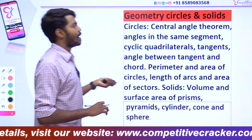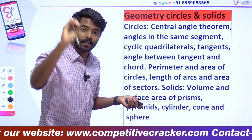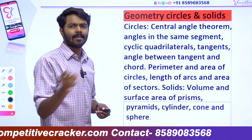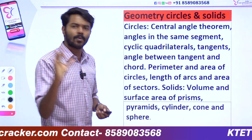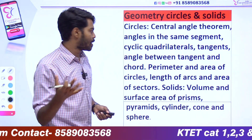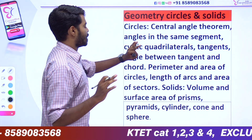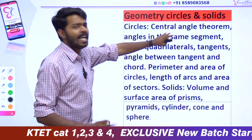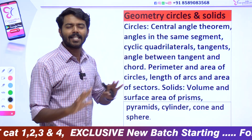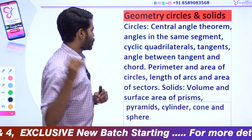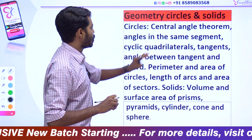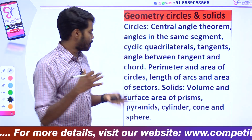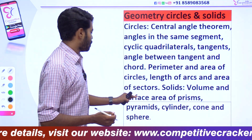Geometry — circles and solids. As you can see, central angles are very important. Angles are the same. If you have any type, all of the content is available. You can see the tangent, the perimeter area, the circle, and the volume.